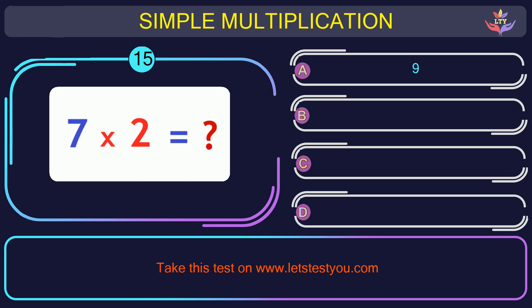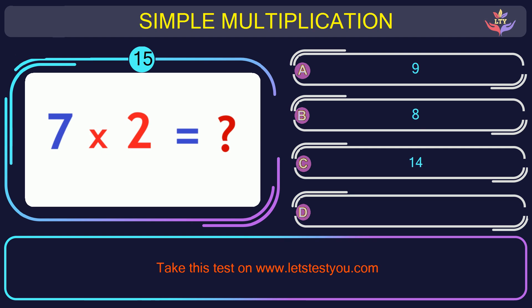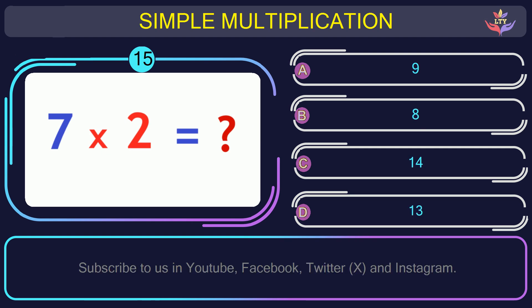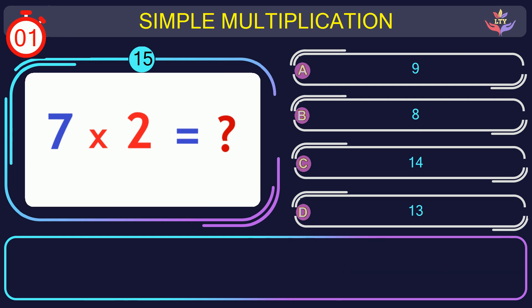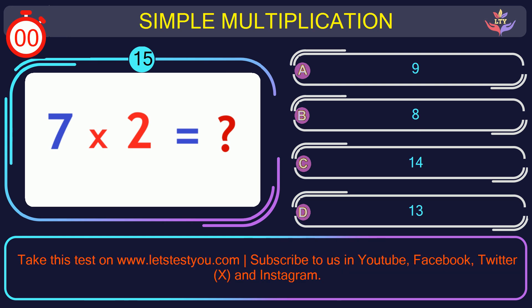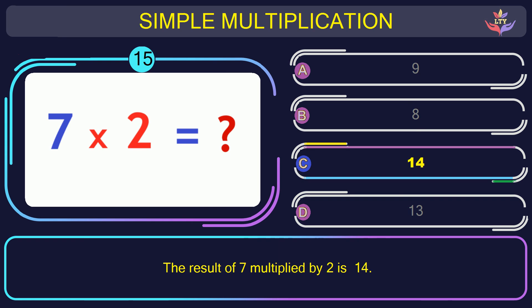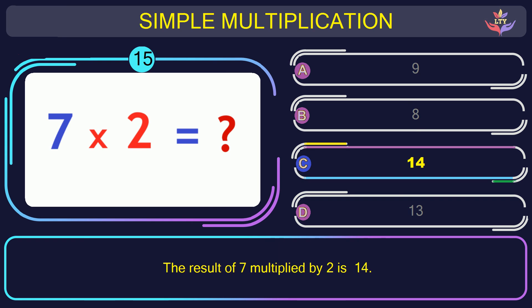Question number 15: what is the result when you multiply 7 by 2? The correct answer is option C: 14. The result of 7 multiplied by 2 is 14.